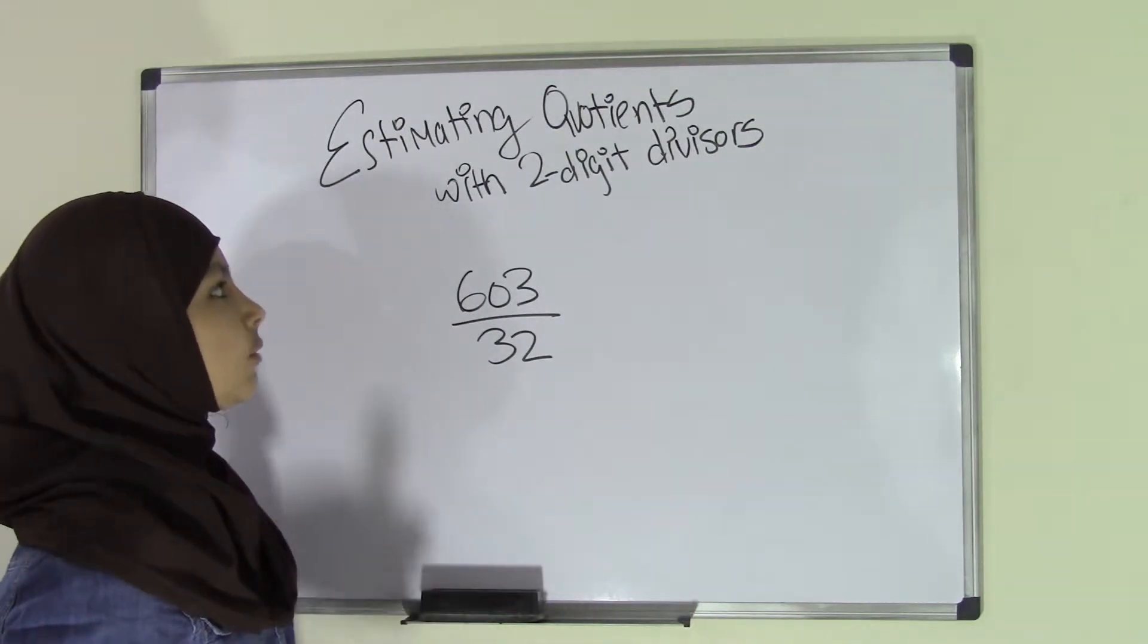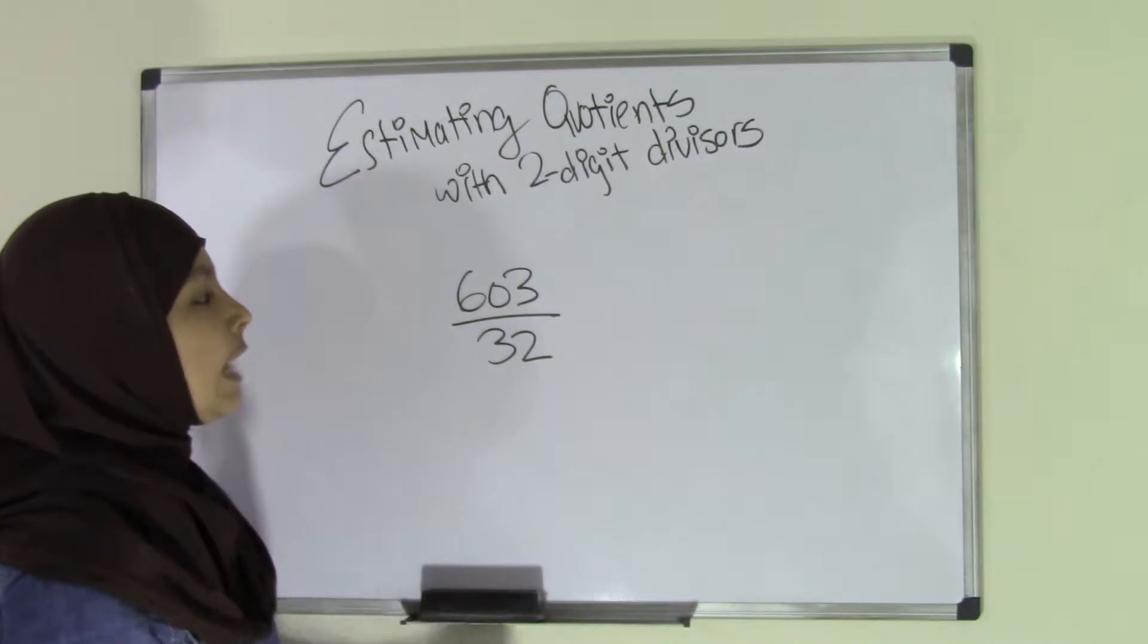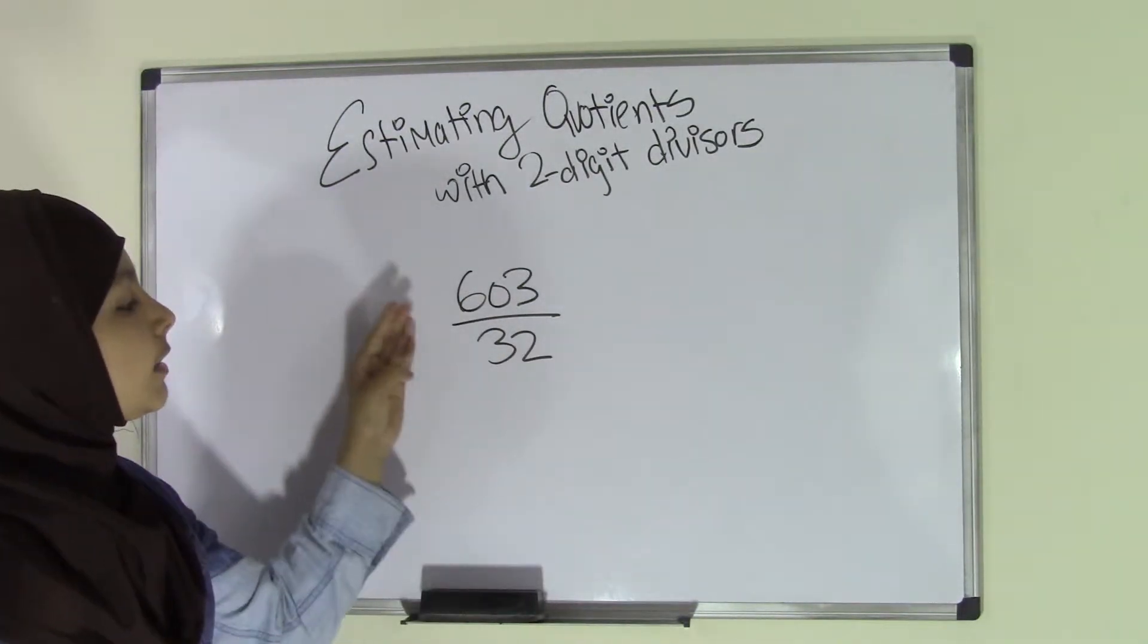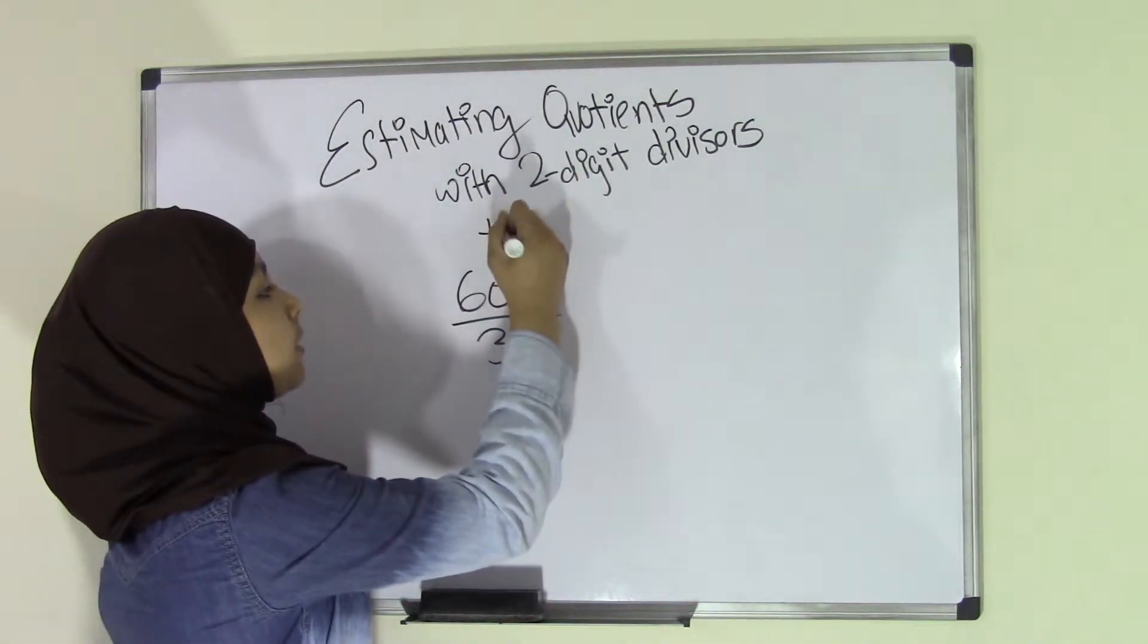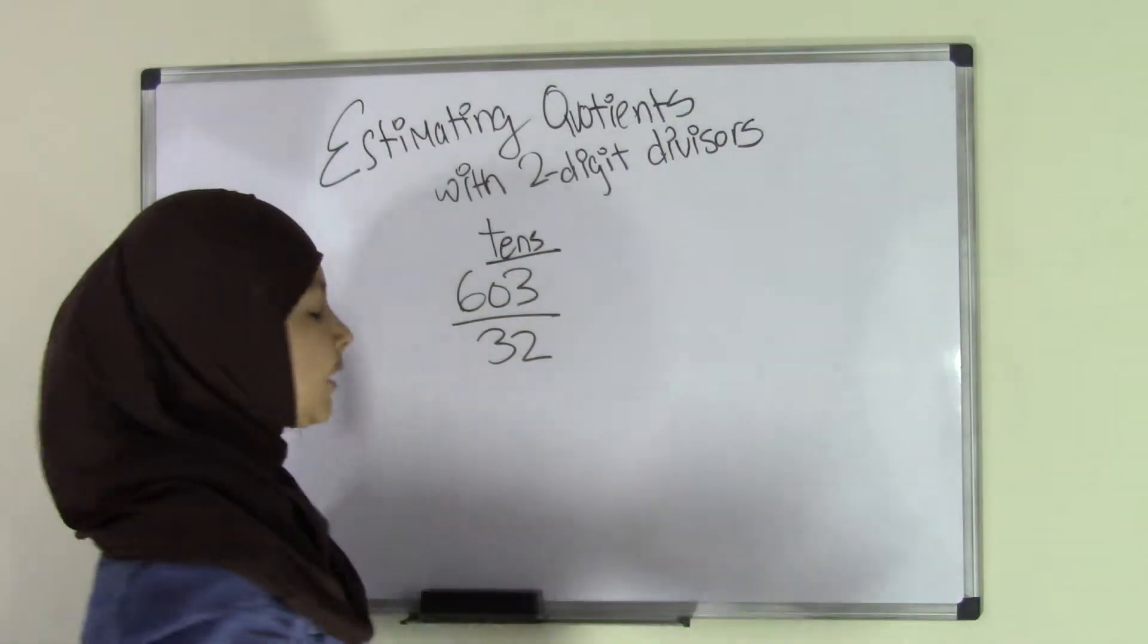Now, if we're going to look at this, we're estimating, so we're not just going to go ahead and do a direct division. We're going to first make two ranges of numbers to estimate these two numbers. So let's say in this case we're going to round this to the nearest tenth place.